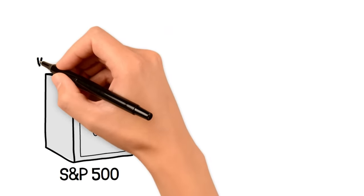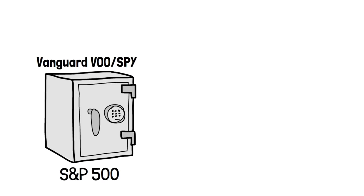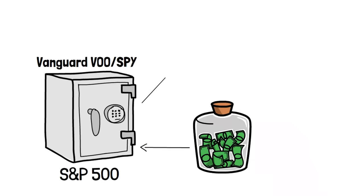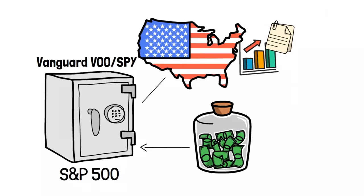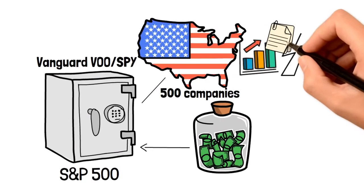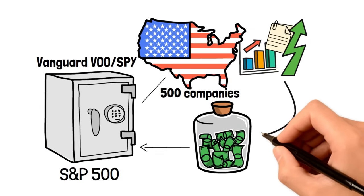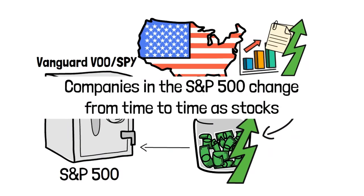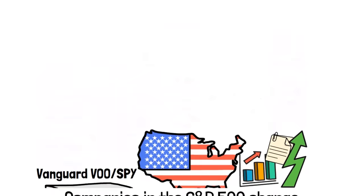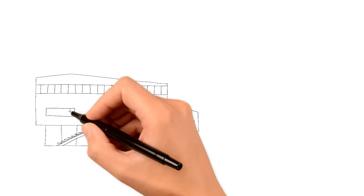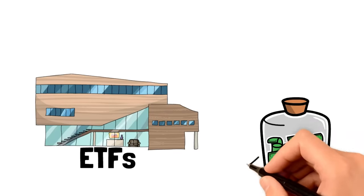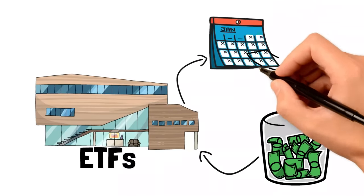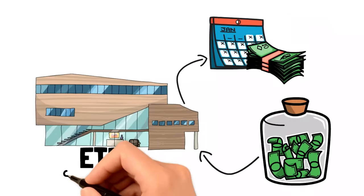For the S&P 500, we have the Vanguard VOO or the SPY index funds. Investing in any of these means putting your money into the top 500 performing company stocks in the United States. If these companies grow, your stocks and your returns will also grow. Note that the list of companies in the S&P 500 changes from time to time as stocks that don't do well are replaced with new ones. The last group of index funds we'll talk about are the dividend ETFs. These funds pay you annual returns from company profits. Two good examples are SDY and VYM. These funds invest in several companies that pay dividends, so they too pay out dividends to you as an investor.